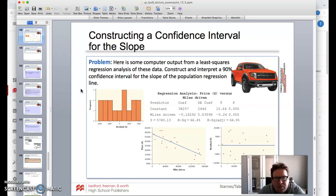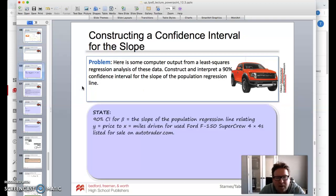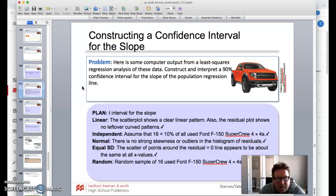Here's some computer output from the least squares regression analysis of this data. We want to construct and interpret a 90% confidence interval for the population slope, so state-plan-do-conclude. We're going to do a 90% confidence interval for the slope of the population regression line relating Y, which equals the price, to X, which equals miles driven for F-150 super crew 4x4 listed on sale on autotrader.com.